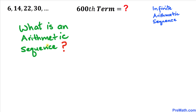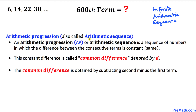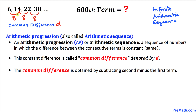You might be wondering what is an arithmetic sequence, so here's the definition. An arithmetic sequence is also called an arithmetic progression. In this sequence, 6 is our very first term. The difference between consecutive terms is positive 8 — the next two terms also have a difference of positive 8, and once again 8. Such a difference between consecutive terms is called the common difference, denoted by lowercase d.